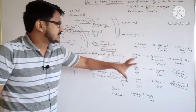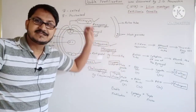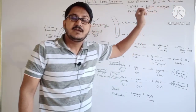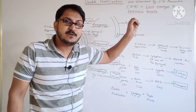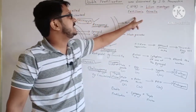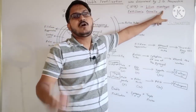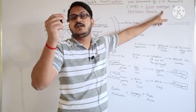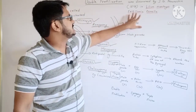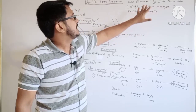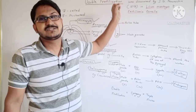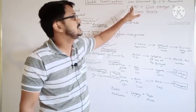This special type of fertilization was discovered by S.G. Nawashin. He first observed this phenomenon in Lilium martagon and Fritillaria tenella — common lily species found in European countries. S.G. Nawashin first discovered double fertilization in the year 1898.